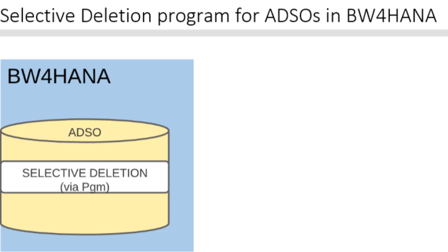There have been some questions around the previous functionalities available in prior BW versions, whether they are still there in BW4HANA 1.0 and 2.0 for advanced DSOs — and one of them is selective deletion generation via program. So the question is: is it still there? Do we still have that functionality in BW4HANA? In this video we'll answer that question and see how it works.